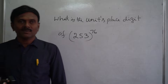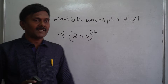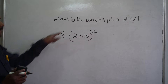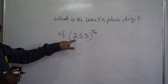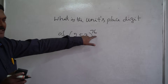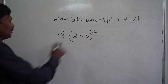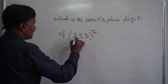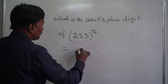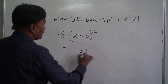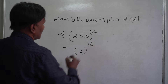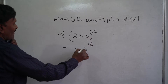Hi, this is Srinivas. Today we see what is the units place digit of 253 to the power of 76. For this, instead of 253, you can write it as 3 to the power of 76 — if you know the value of this one, it's enough.